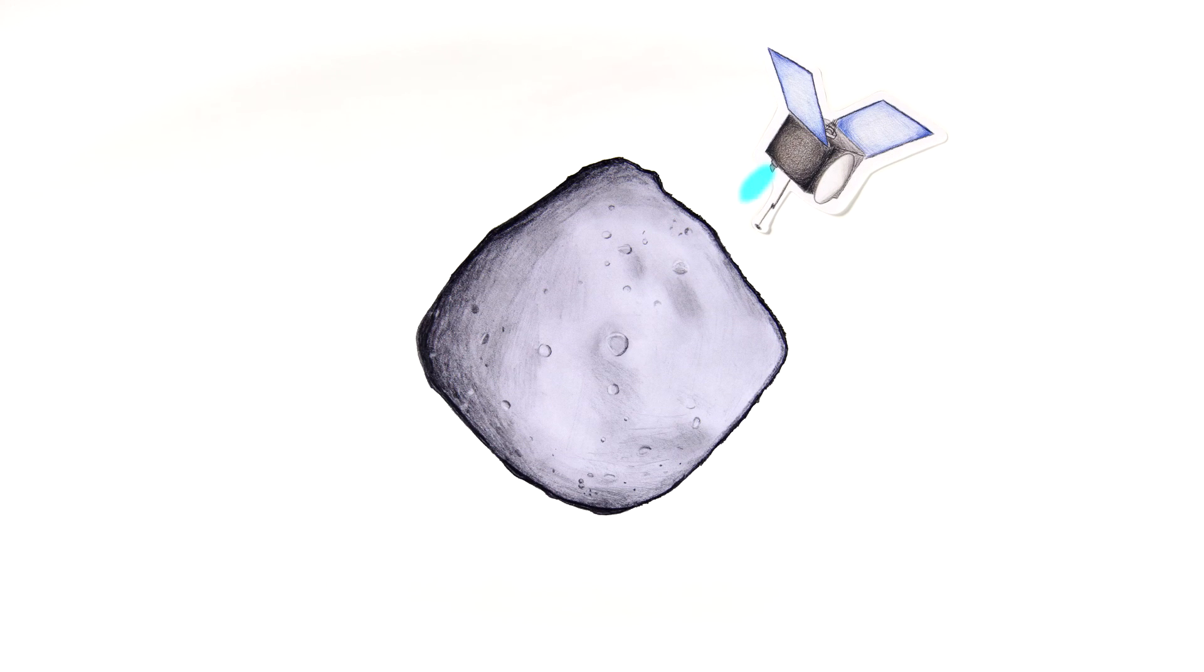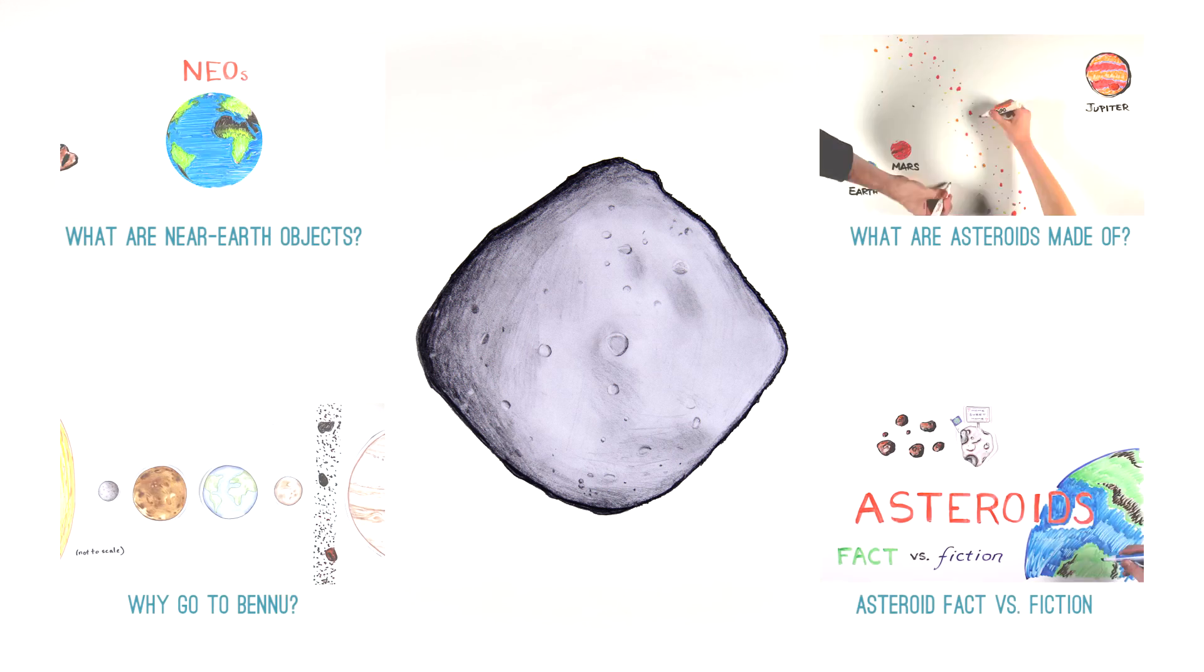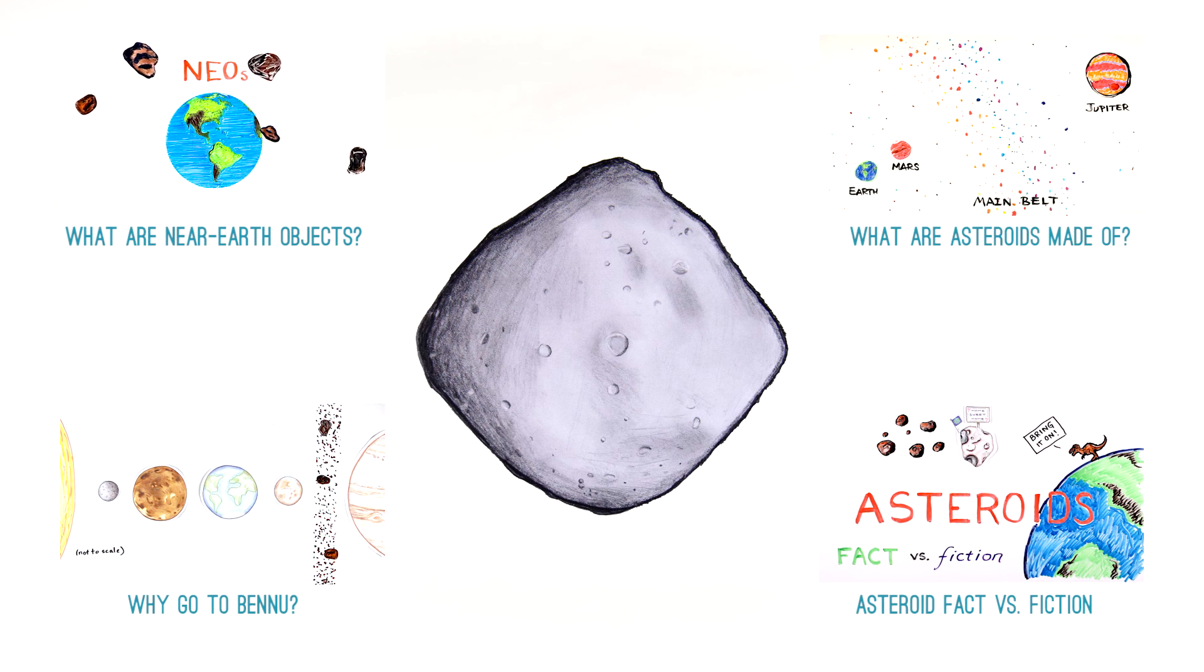The OSIRIS-REx mission spacecraft will carefully measure the small deviations in Bennu's orbit caused by the Yarkovsky effect—an attempt to better predict the odds of an Earth impact in the future. You can learn more about the OSIRIS-REx mission from the other videos in the 321 Science series.